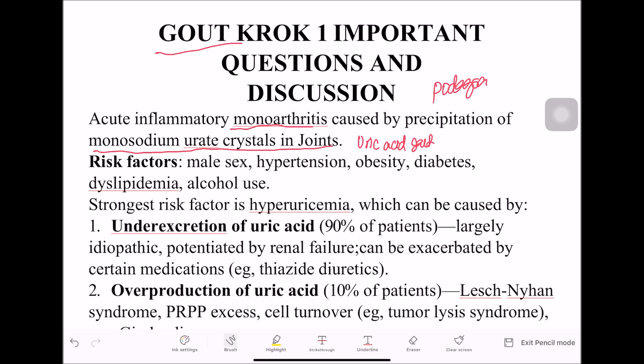The exact cause is unknown, but we have some risk factors for gout: male sex, hypertension, obesity, diabetes mellitus, dyslipidemia, and alcohol use. There are also strong risk factors that cause hyperuricemia, which has two main reasons.